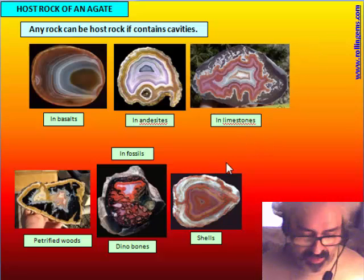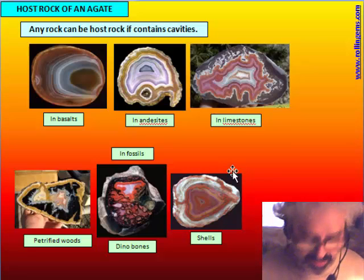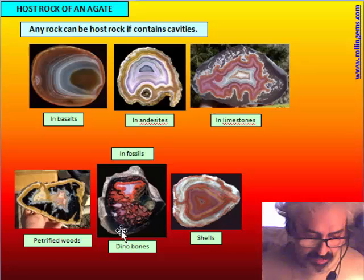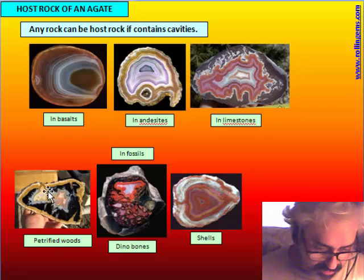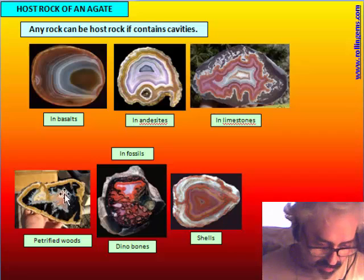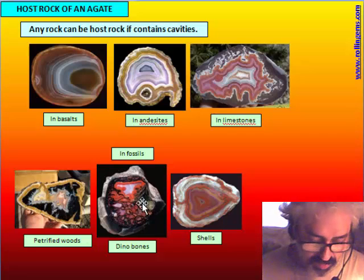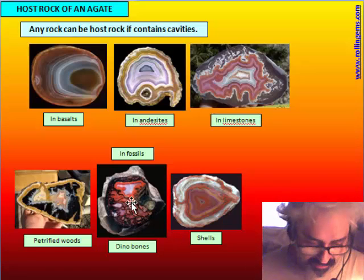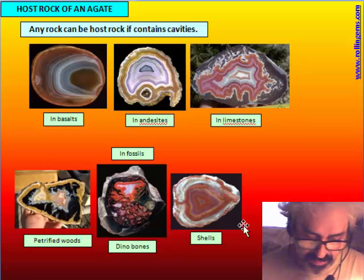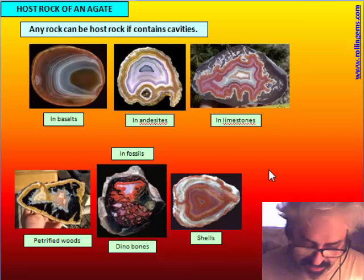Any volcanic rock is good as host for agate, but also sedimentary rocks — there are many agates found in limestone and other sedimentary rocks. Also fossils can offer a cavity for an agate. Petrified wood can have cavities with banded chalcedony inside, and dinosaur bone, especially large bones like tibia, can have a big cavity in the middle.